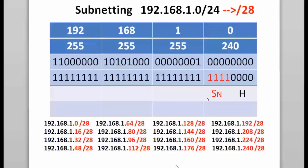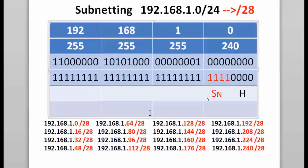We could go up to slash 28. Now I have four subnetwork bits. Notice that the subnet mask has changed from 255.255.255.0 when it was slash 24 to now 240. I now have 16 subnetworks, or two to the fourth power. There are also two to the fourth power of hosts per network, so 16, or 14 usable host addresses per subnet.